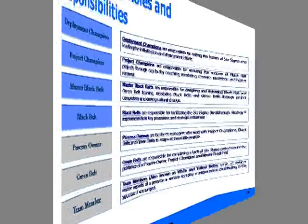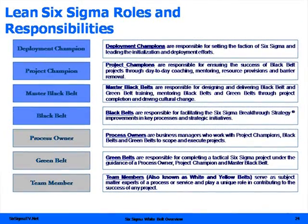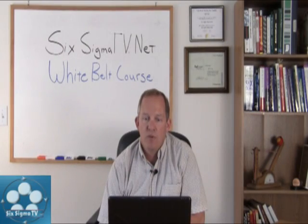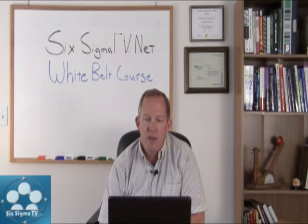Process owners are the business managers who work with the project champions, black belts, and green belts to scope and execute projects. Once a process is defined, the champions, black belts, and green belts will go through and fix that process and then turn it back over to the process owner, who will be responsible for that end-to-end process ownership.